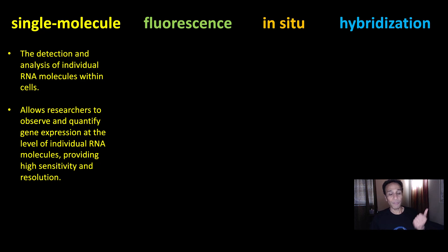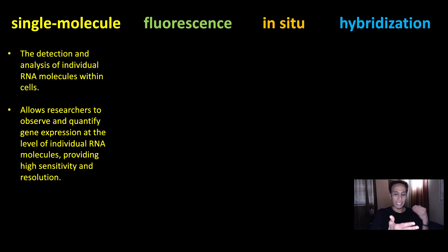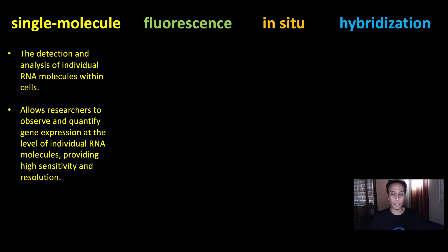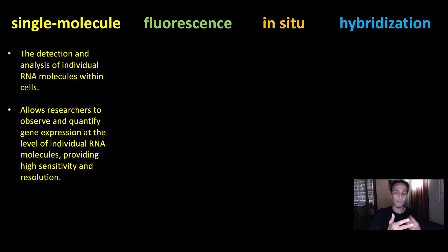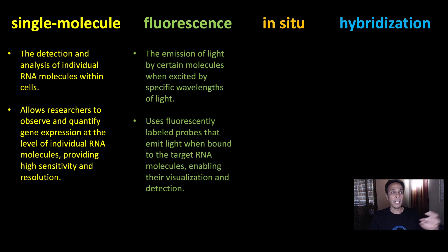What does fluorescence mean? You have a specific light or wavelength, and you're hitting another material with that wavelength. That material absorbs the light and gives off its own light. It absorbs one wavelength and gives off another wavelength. That's what fluorescence is.